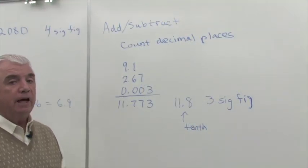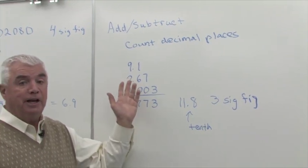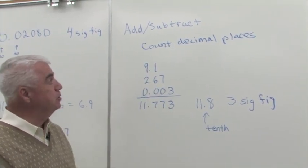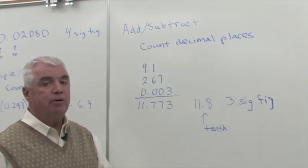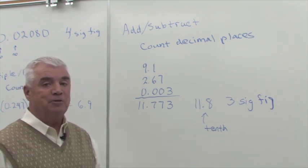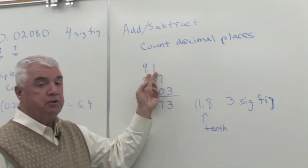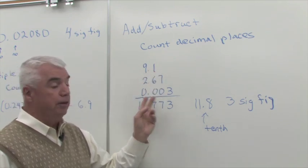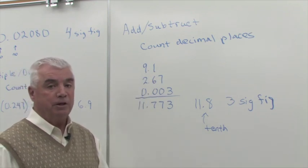When we add or subtract, that's a different operation. And so we have a different rule pertaining to significant figures. Here we count decimal places. Rather than counting significant figures, count decimal places. And the least number of decimal places wins. So I have a number expressed to the tenth, the hundredth, and the thousandth. My answer can only be expressed to the tenth.